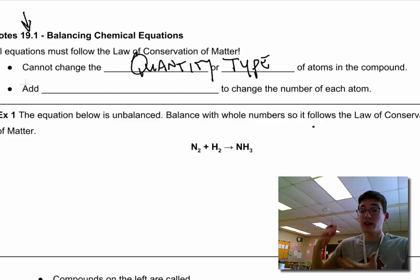I can change the quantity of the compound. So I can take multiples of things, but I cannot change the compound itself. And so to change the numbers of atoms, if I need more, let's say, we add coefficients.